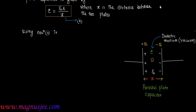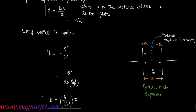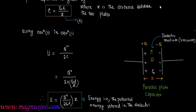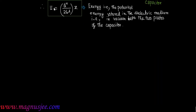Using equation 2 in equation 1, we get U equal Q squared divided by 2C equal Q squared divided by 2 into epsilon 0 A divided by X. Therefore, U equal Q squared divided by 2 epsilon 0 A into X, which is the potential energy stored in the dielectric medium, that is in vacuum between the two plates of this parallel plate capacitor.